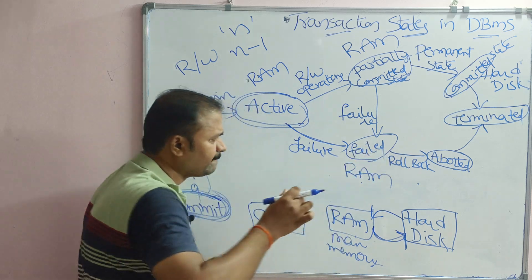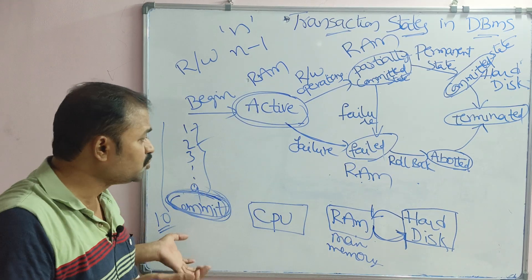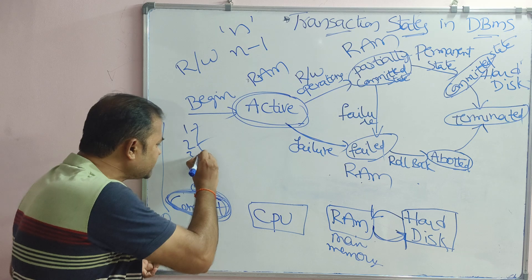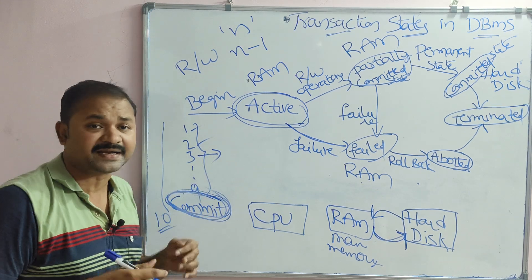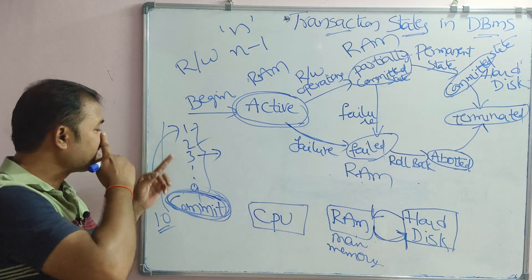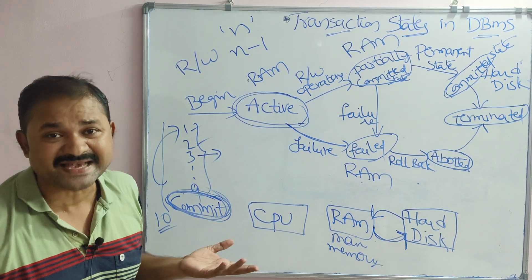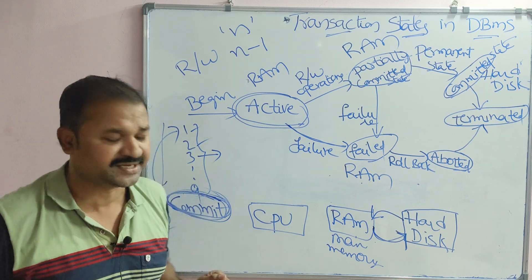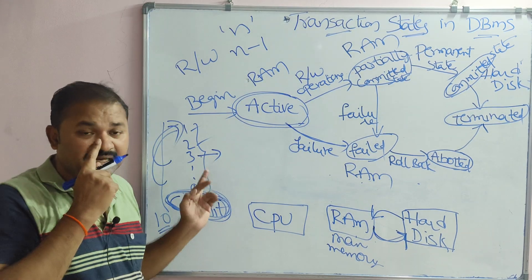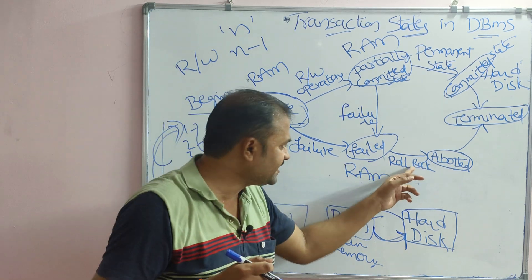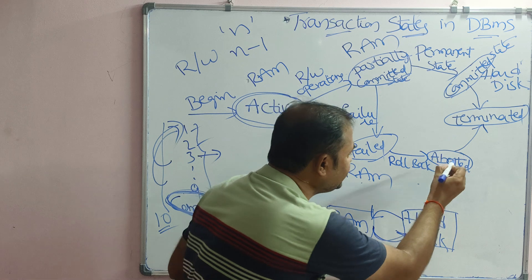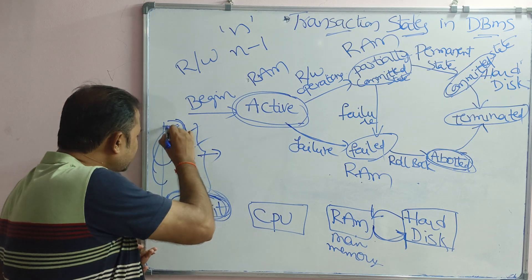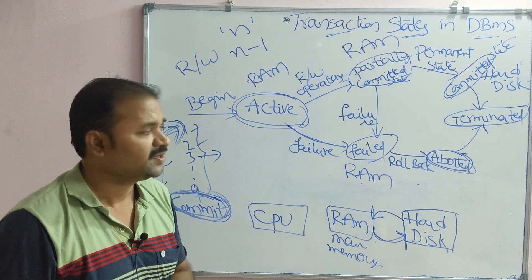In the failed state, the transaction has failed, so we need to roll back. For example, if there are 10 instructions and a problem occurs at the third instruction, we must roll back to the first instruction of the transaction. This is because of atomicity — atomicity means all instructions must be executed as a single unit. If any problem occurs, we roll back to the starting instruction. This rollback means the transaction is aborted, and execution begins again from the first instruction.